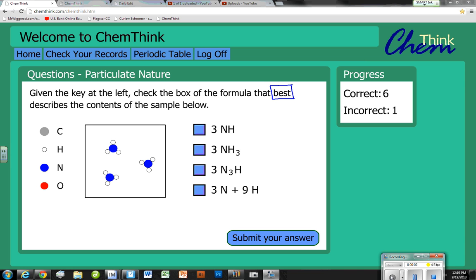This is part two of two parts directed at answering ChemThink questions for the particulate nature of matter. The first part covered seven questions, and this will cover three or four more. Given the key at the left, check the box of the formula that best describes. When you see 'the box,' that tells you it's probably only one answer, and 'best' tells you for sure there's only one answer.